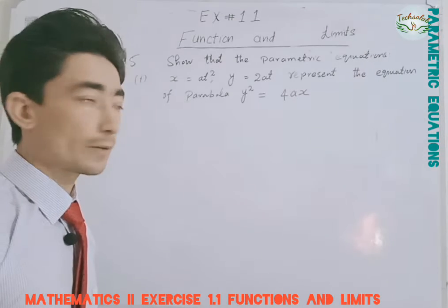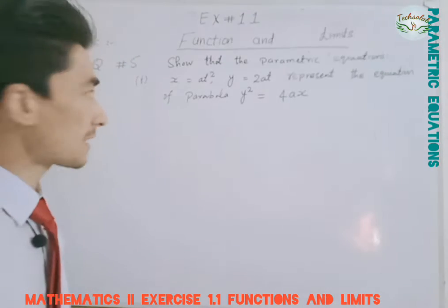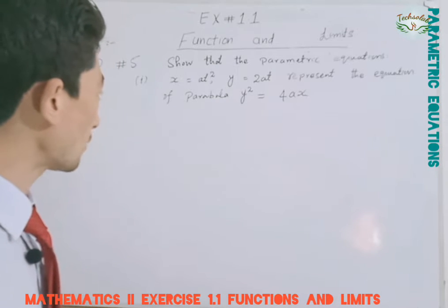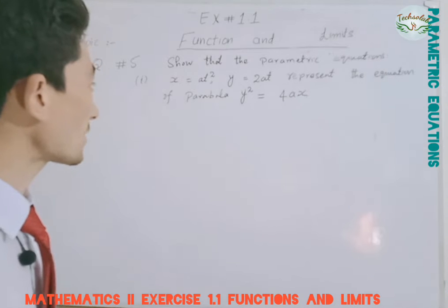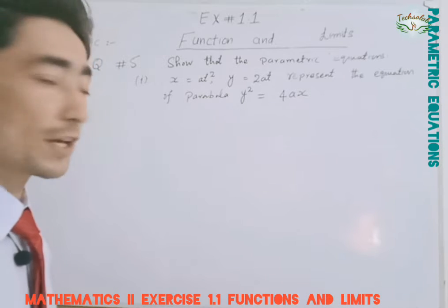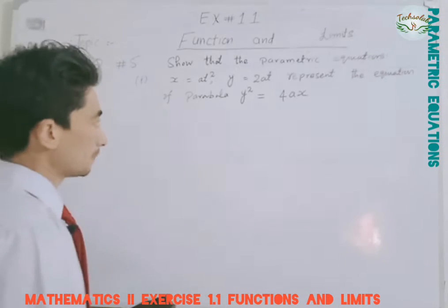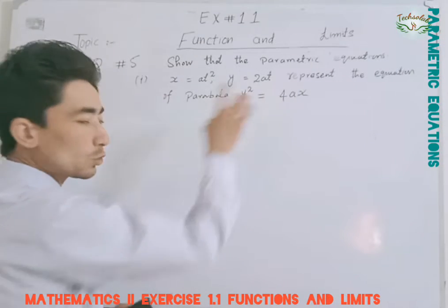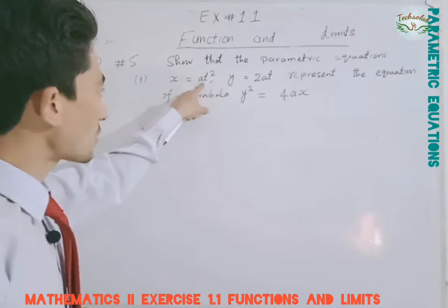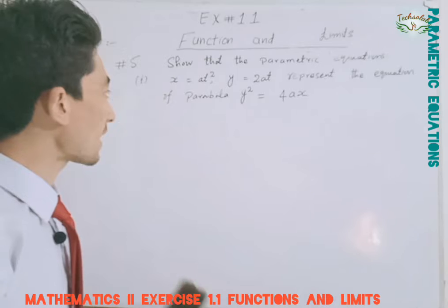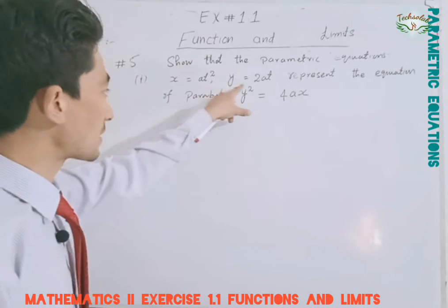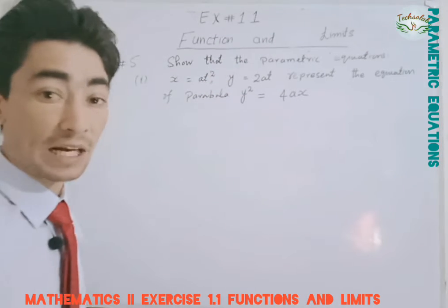Question number 5: show that the parametric equations x = at², y = 2at represent the equation of parabola y² = 4ax. We have to show that these two equations are the parametric equations of the parabola.